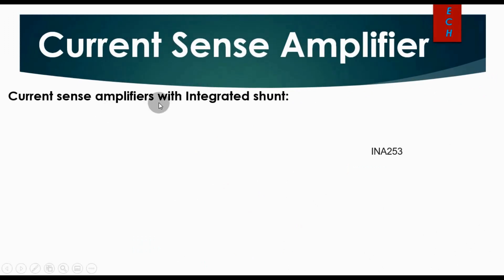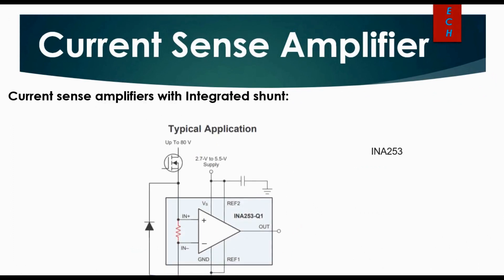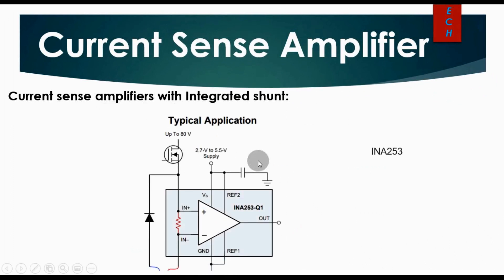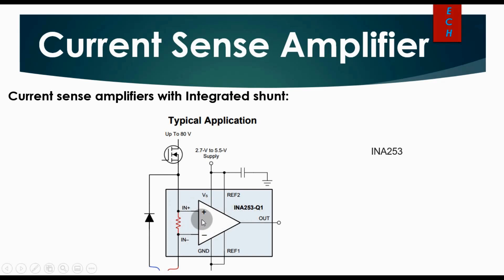Now let us look at another type: the current sense amplifier with integrated shunt. This is the typical application for a current sense amplifier with integrated shunt. This data is taken from the Texas Instruments datasheet for the INA253. You can see here the current shunt resistance is connected inside the operational amplifier — INA253 has a built-in shunt resistance — and its output is analog.